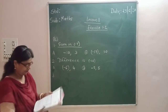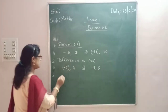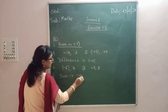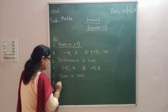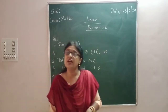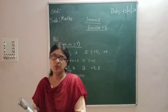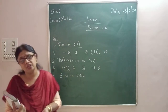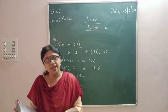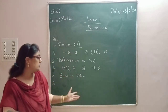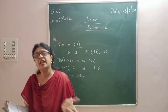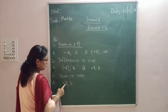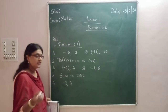Now the third one: sum is 0. Can you give me examples of two integers where, when I add them, the answer is 0? The additive inverse. Suppose if I take 3, then 3 and minus 3. So minus 3 plus 3 is 0.